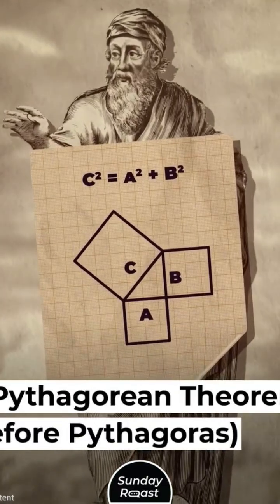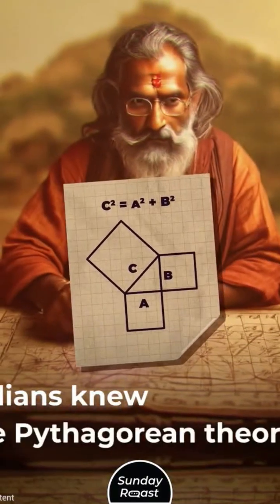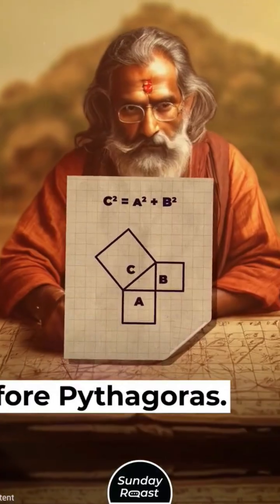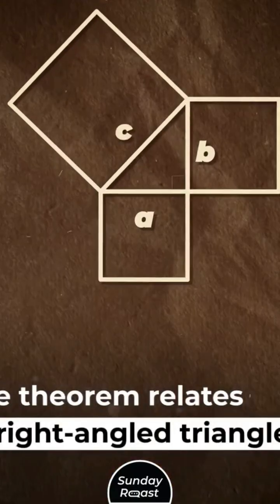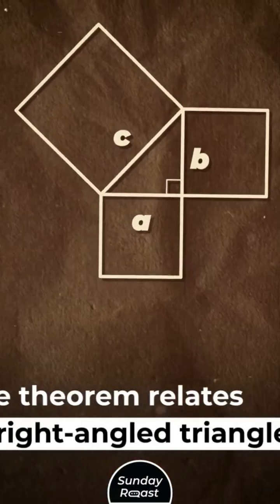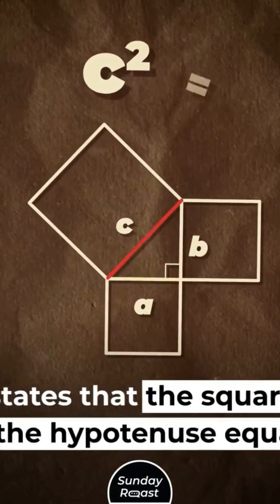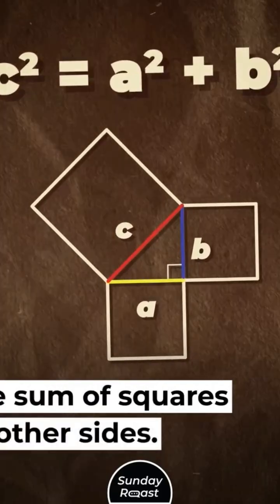Pythagorean Theorem Before Pythagoras. Indians knew the Pythagorean Theorem before Pythagoras. They used it in religious rituals. The theorem relates to right-angled triangles. It states that the square of the hypotenuse equals the sum of squares of other sides.